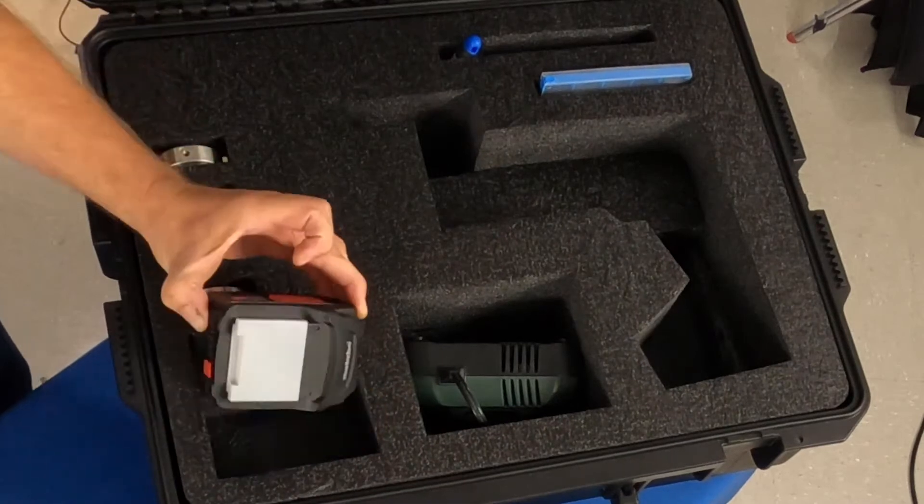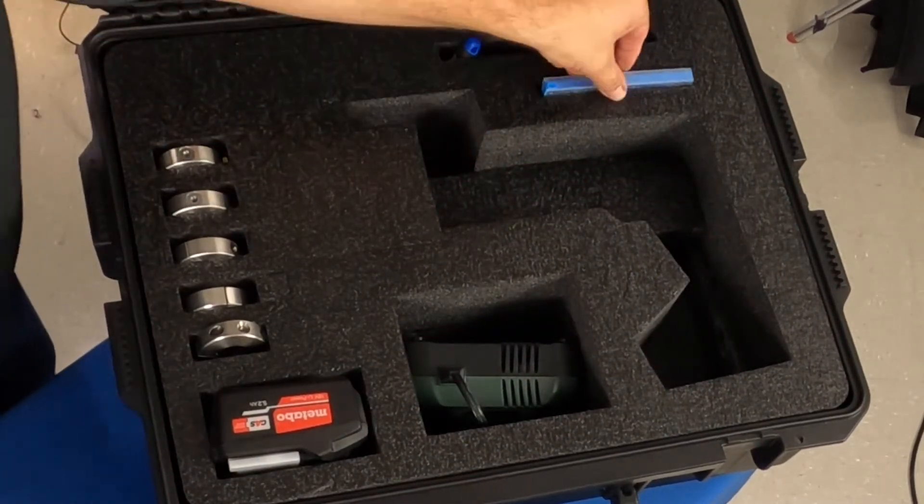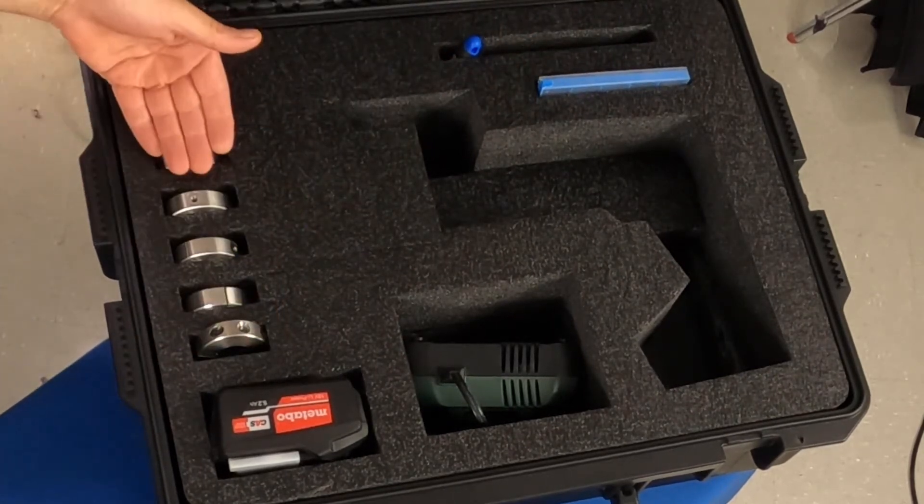In the case, we have a spot for an extra battery, your charger here, obviously a spot for the tool itself, some tool bits, a spot for your wrenches, and a spot for your saddles.